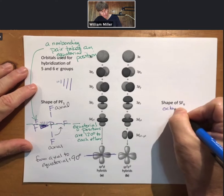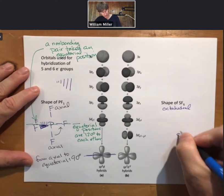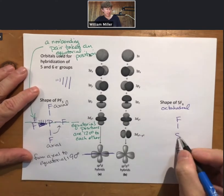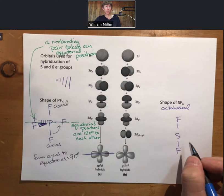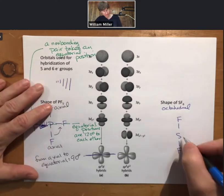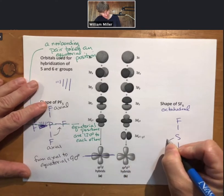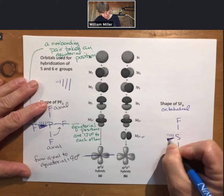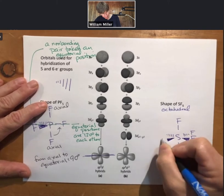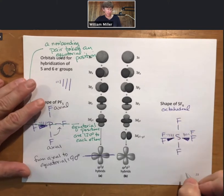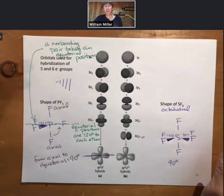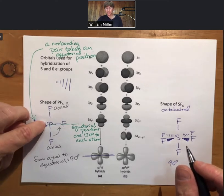For octahedral — six electron groups — the shape made has eight sides. Start with two positions straight up and straight down, then an out wedge and a back wedge on the sides. All six positions are equivalent, which is why they're not called axial and equatorial. Every single angle in the octahedral shape is 90 degrees. A non-bonding electron pair can go anywhere since all positions are equivalent — and that's true for all electron group counts except five.